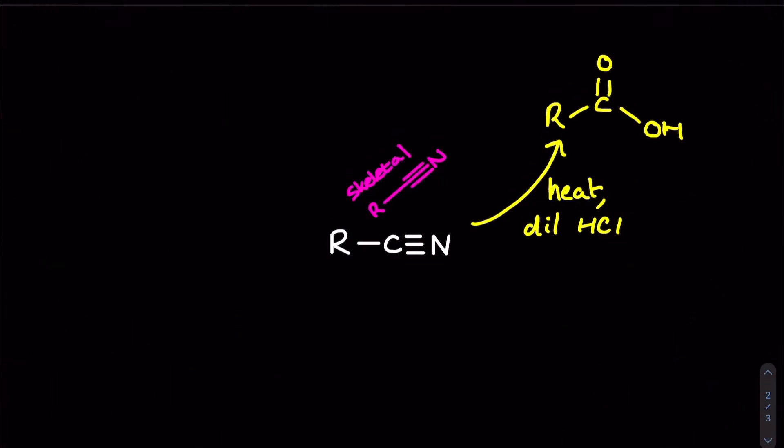So that was our acid hydrolysis reaction and up next we have a reduction reaction. In this reaction the carbon and the nitrogen which are currently triple bonded to each other are each going to pick up two hydrogen atoms.